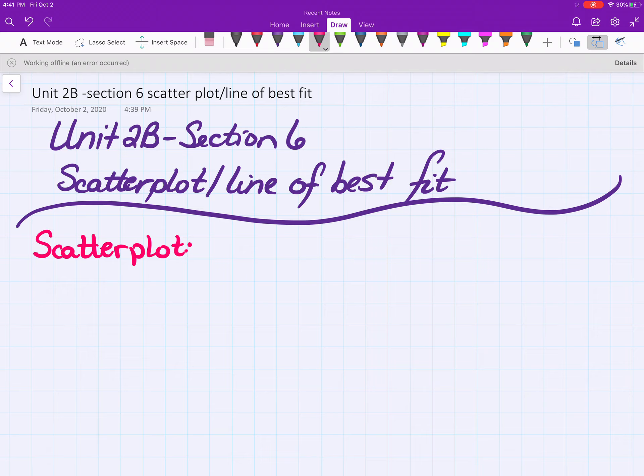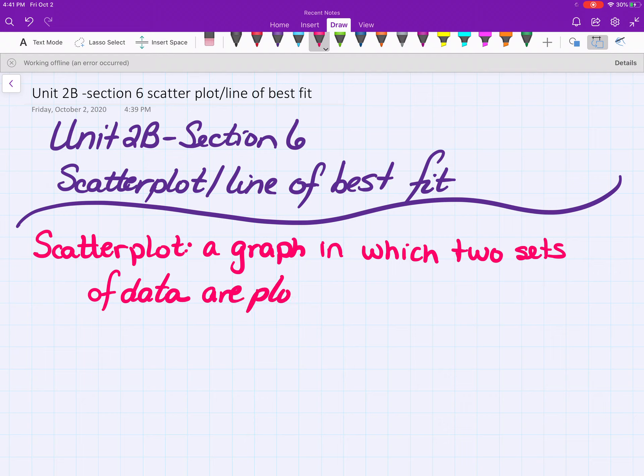They're very tedious to create. A scatterplot is a graph in which two sets of data are plotted as ordered pairs in a coordinate plane.